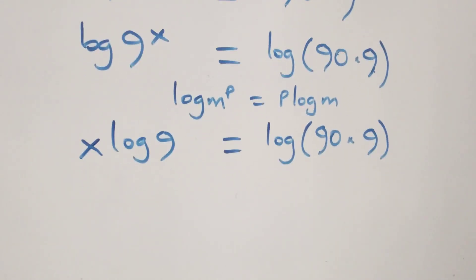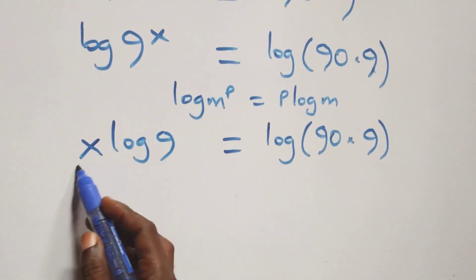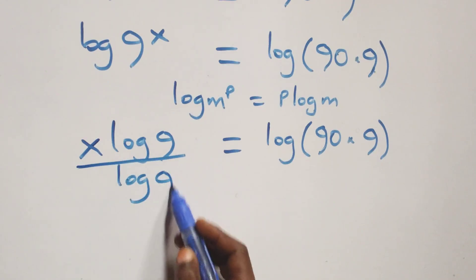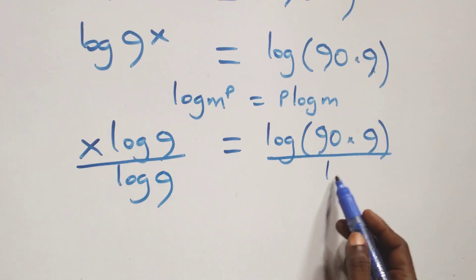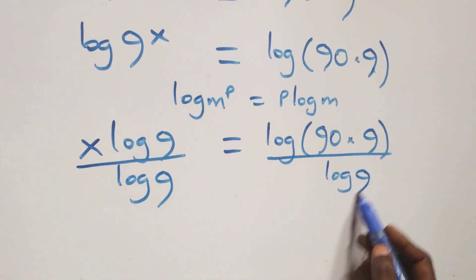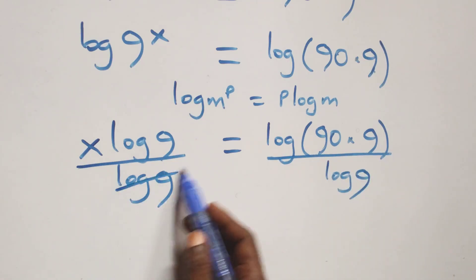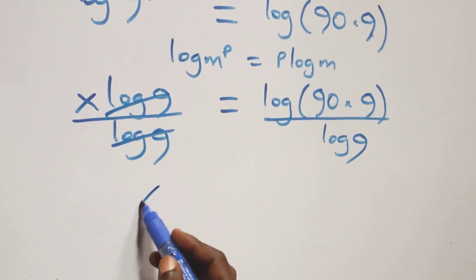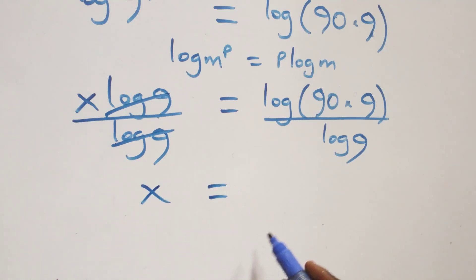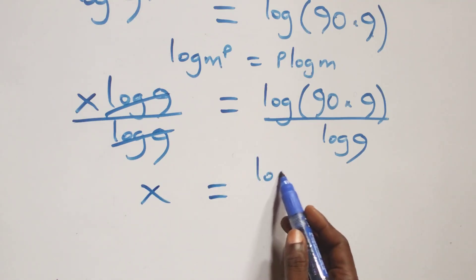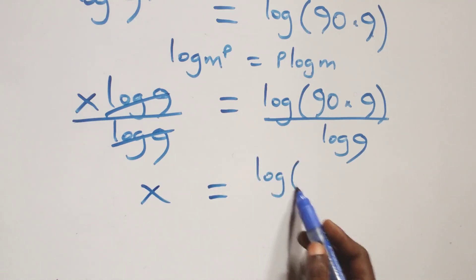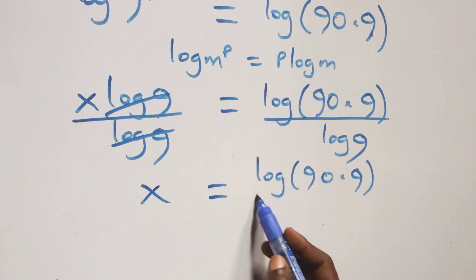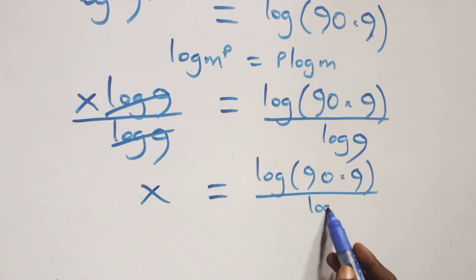The next step, we divide both sides by log 9. Log 9 cancels each other, and we have x equals to log of 90 times 9 over log 9.